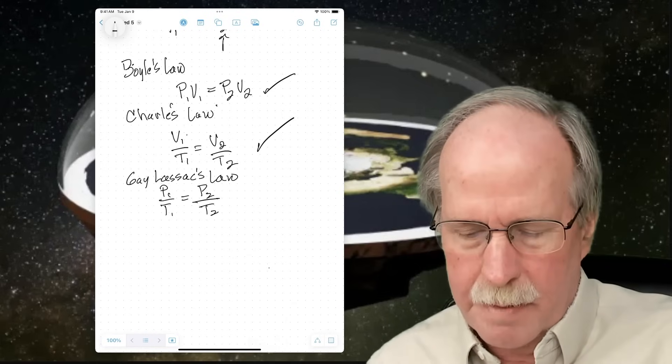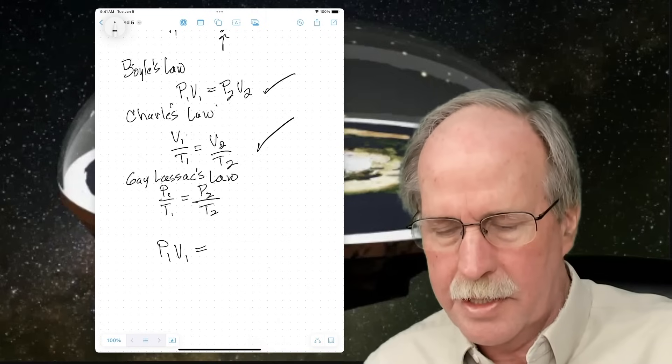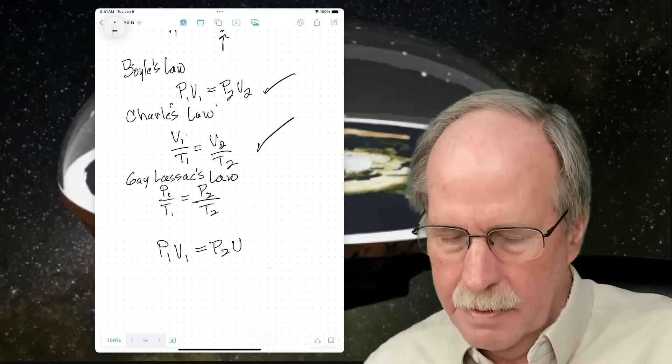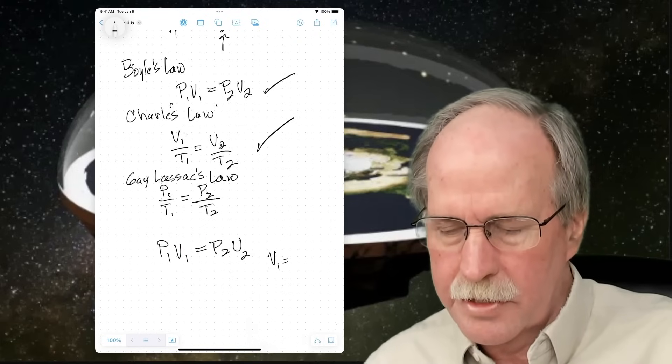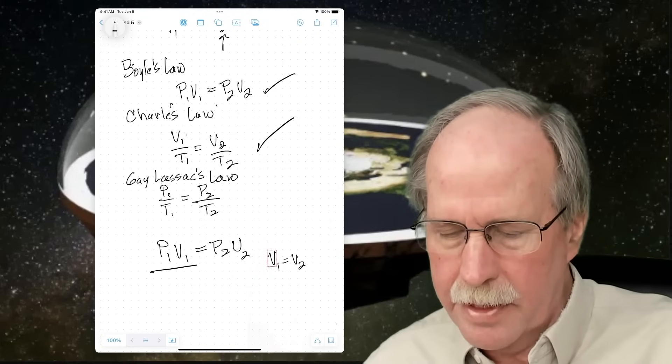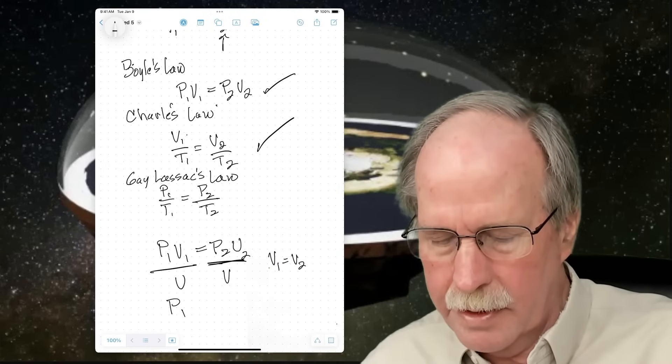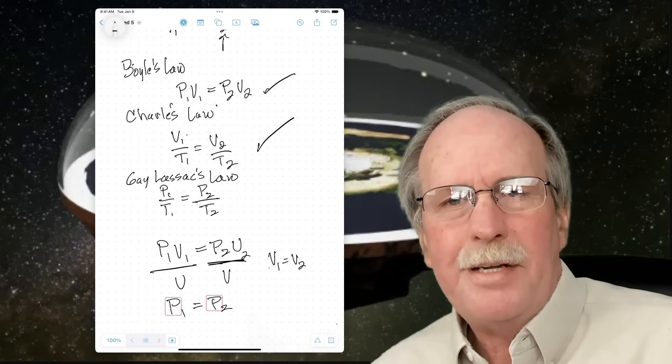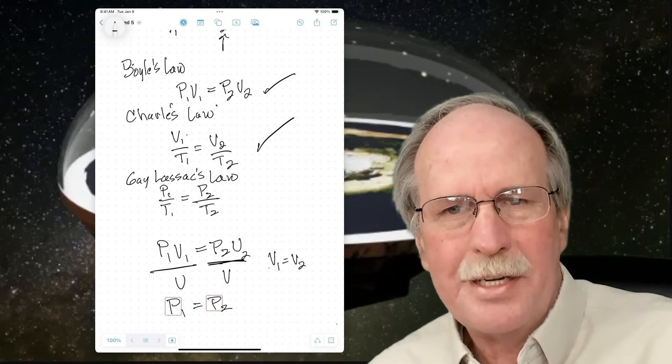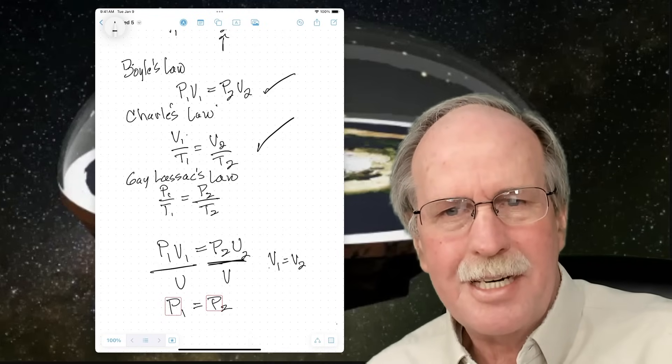Let's look at Boyle's law, for example. So if we have P1 V1 equals P2 V2, but V1 equals V2, we can simply divide both by volume, and we get P1 equals P2. However, if P1 and P2 are different, they can't be equal to each other. They can only be the same value. So Boyle's law simply doesn't work anymore.